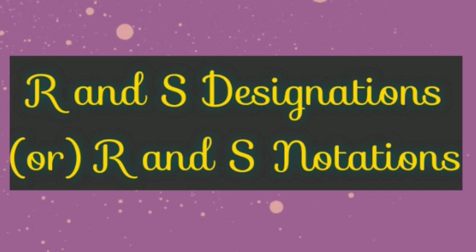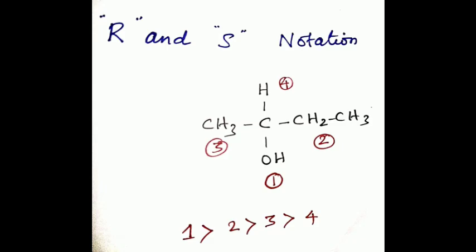The system now widely used is the Cahn-Ingold-Prelog system, in which the four groups attached to the stereo center are numbered 1, 2, 3 and 4, and are ranked according to a set of sequence rules so that they can be assigned priorities for arrangement in a sequence 1, 2, 3 and 4.